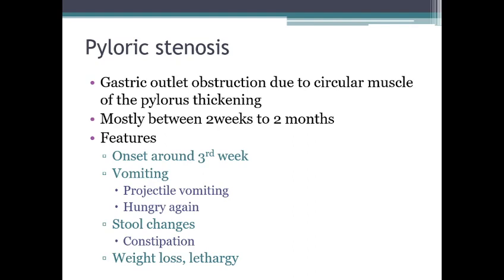The pylorus is the outlet of the stomach. The stomach starts from the cardiac sphincter and at the other end, where it opens to the duodenum, we have the pyloric sphincter. Due to thickening of the circular muscles of the pylorus, the pyloric sphincter or gastric outlet may become obstructed. This happens mainly between two weeks to two months of age. The child vomits, and that vomit is a projectile vomiting.